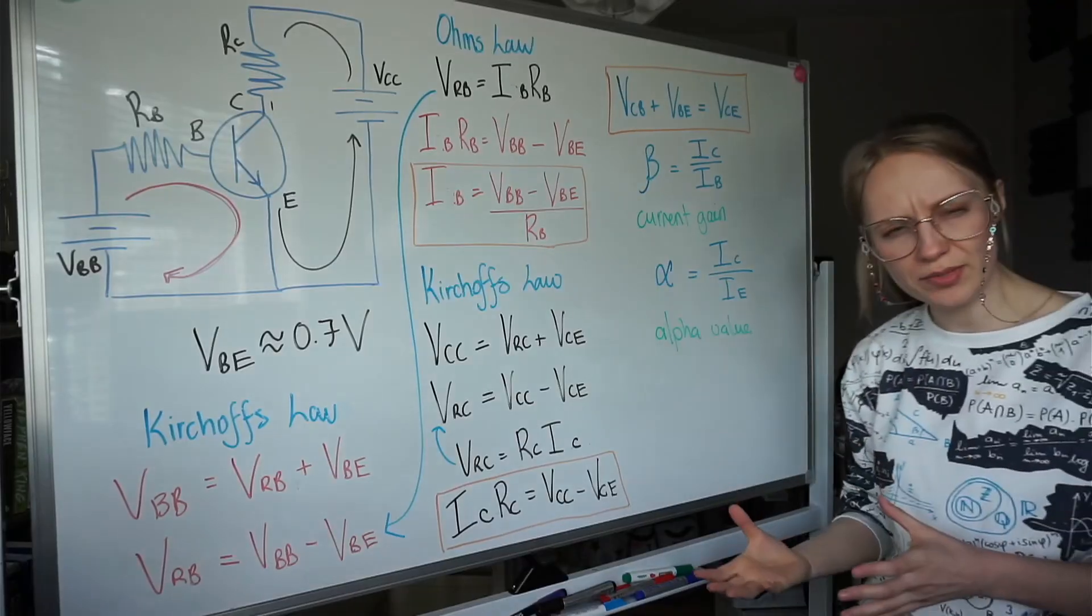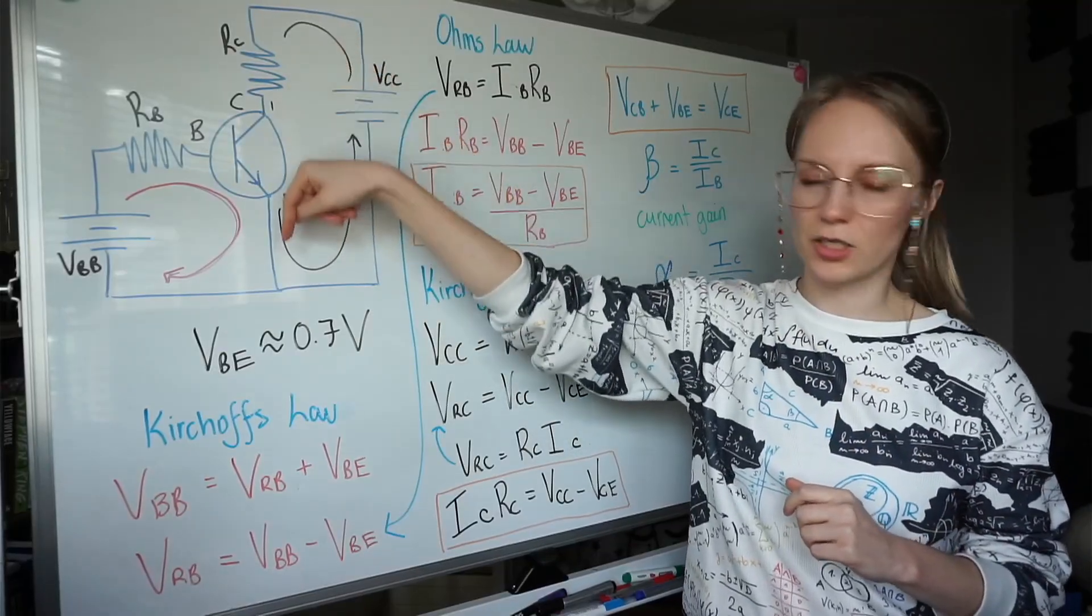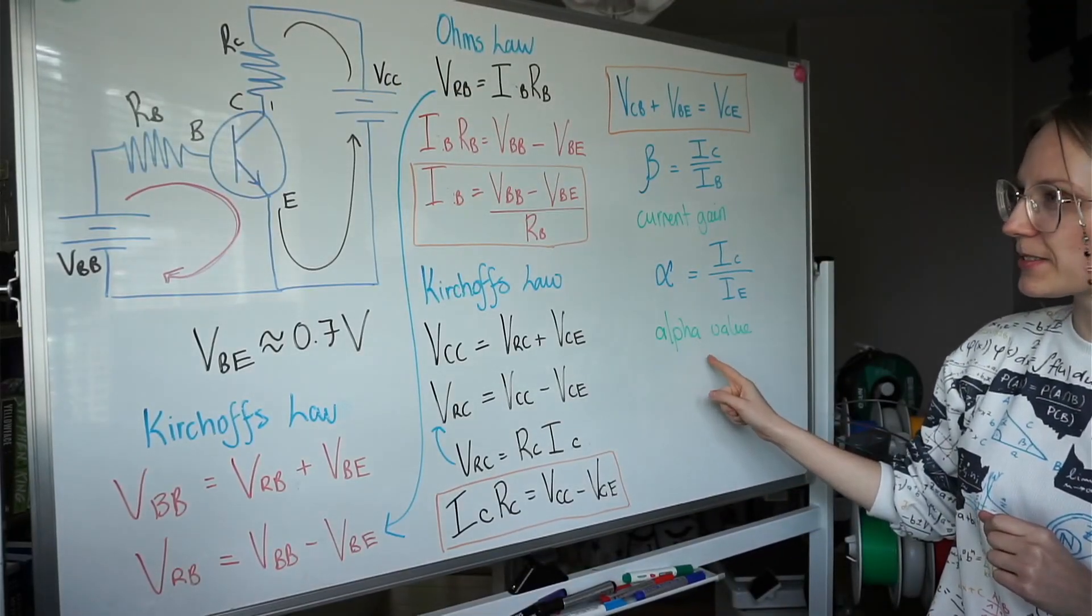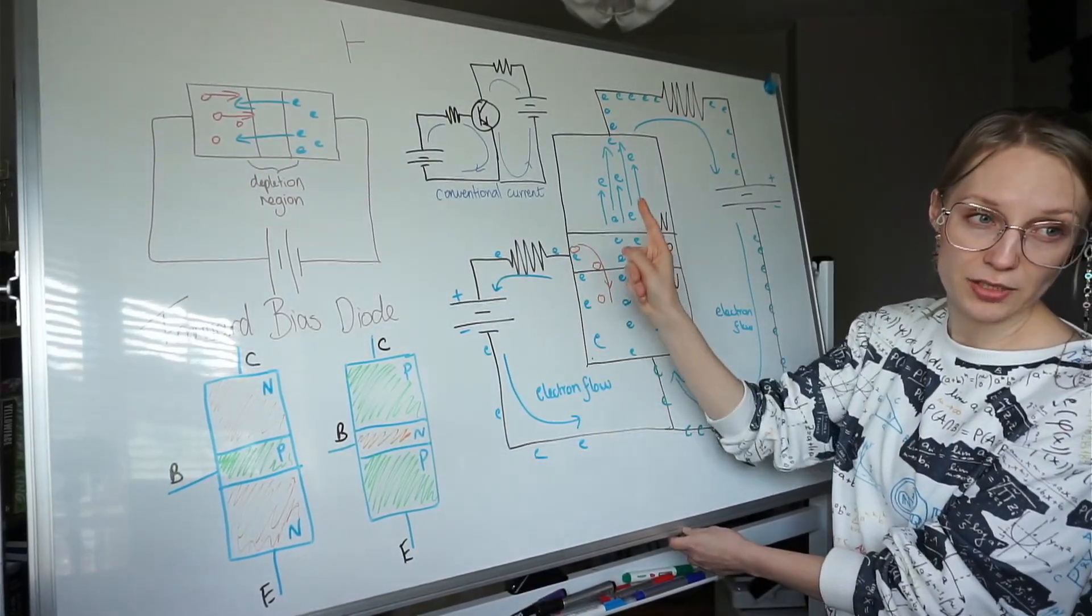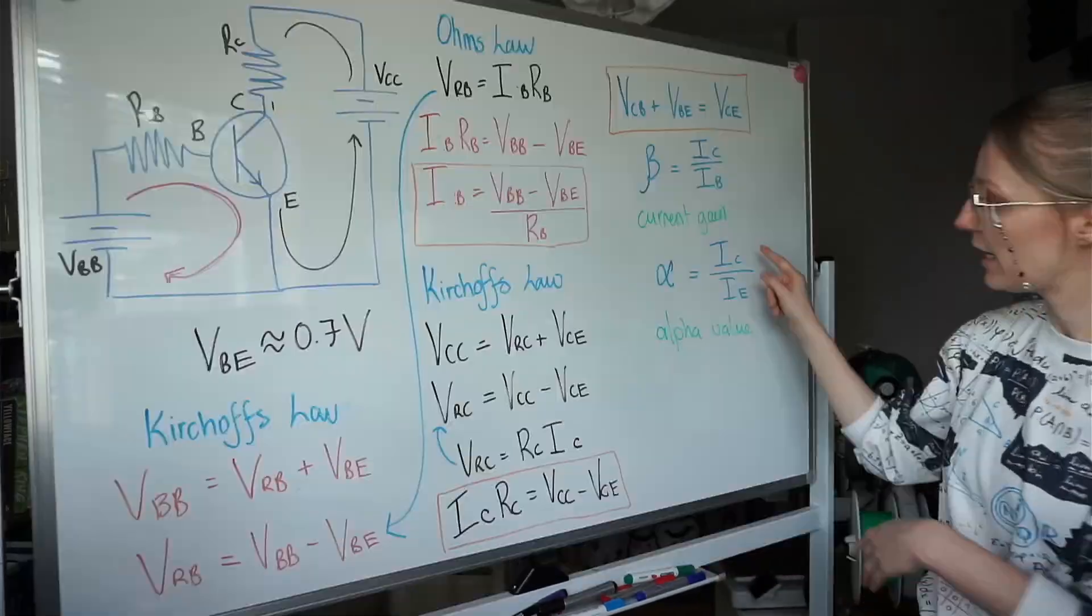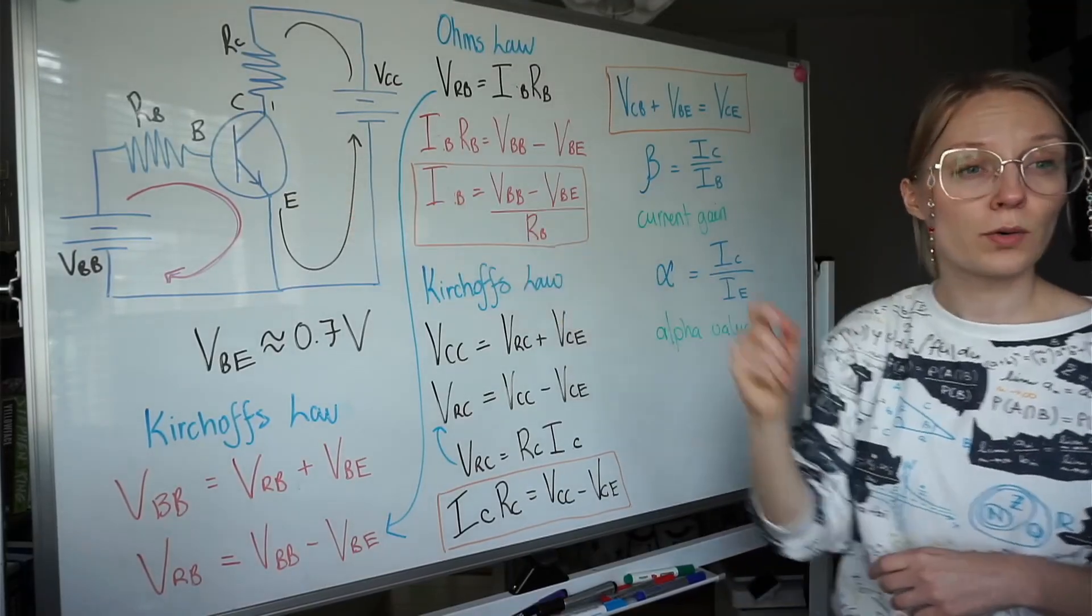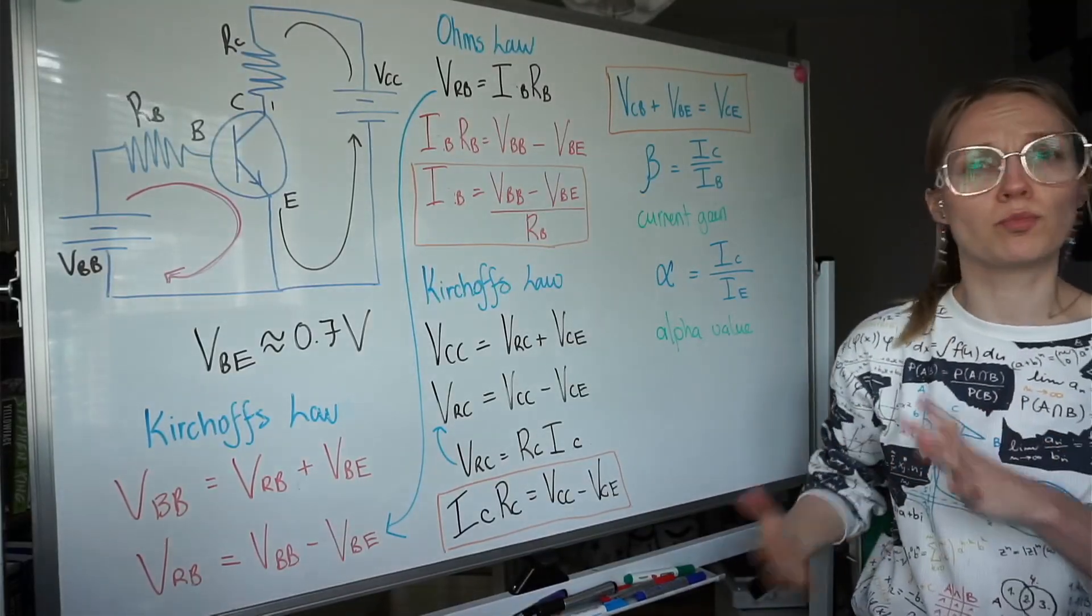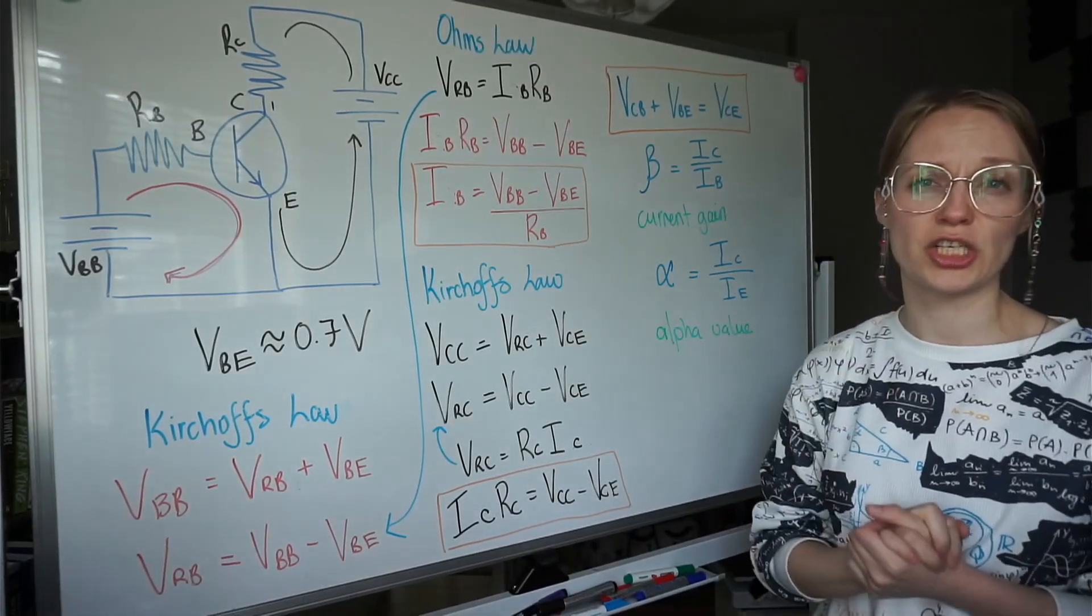Finally another parameter that sometimes some data sheets have is the alpha value and that is basically an efficiency value. It's the current coming out here divided by the current out here. If you remember our electron flow all the electron free electrons are going in here. Some are going in this direction and some are going in this direction. Most of them are going to in the collector direction but some of them are going in the base direction. If we get the collector one divided by all the ones that are going in there we're going to get a value really close to one but always a little bit under - 0.99, 0.98, 0.97. We will never get higher than one. But again just to bear with me that sometimes your data sheets will not have this alpha value.